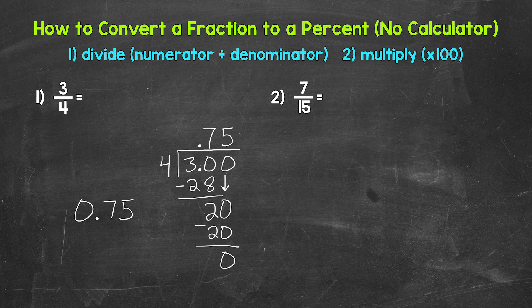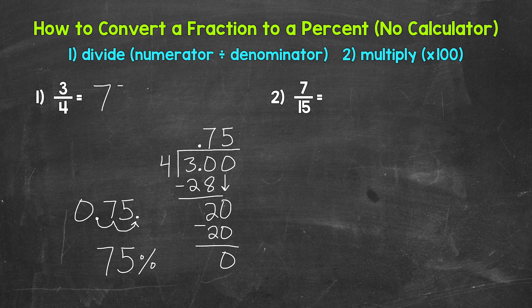Let's multiply it by 100 to convert it to a percent. And a quick way to do that — again, move the decimal twice to the right. So once, twice. So the decimal is now here. This gives us 75%. We don't need that decimal at the end since we have a whole number here — we can leave that off. So 3 fourths equals 75%.